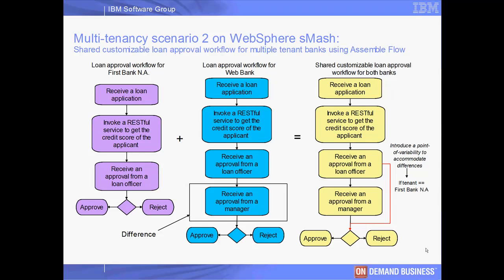WebSphere MASH is a platform for creating and running applications quickly and easily. It supports dynamic scripting languages such as Groovy and integration workflows for RESTful services. WebSphere MASH is built on a small modular architecture. Each application runs in its own Java Virtual Machine process, which is short-lived and stateless, has a small memory footprint, and can start rapidly.